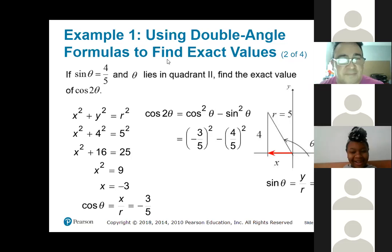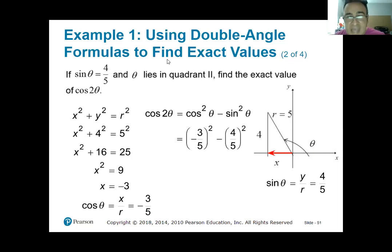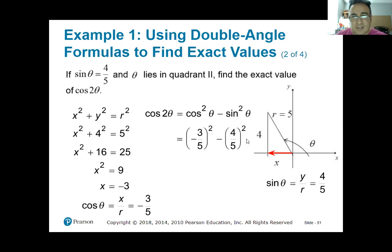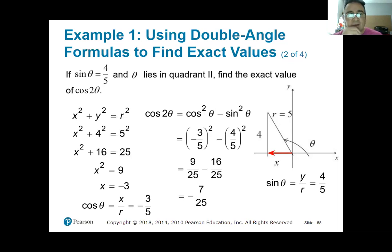Back to math. So here you just apply the exponents, then simplify. You get negative 7 over 25.